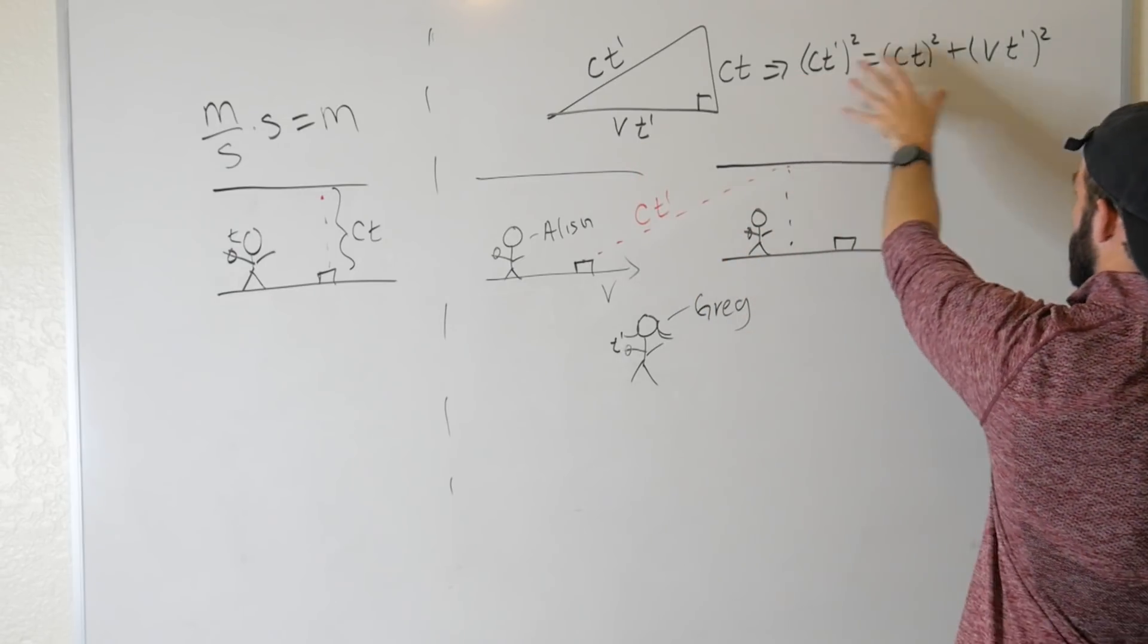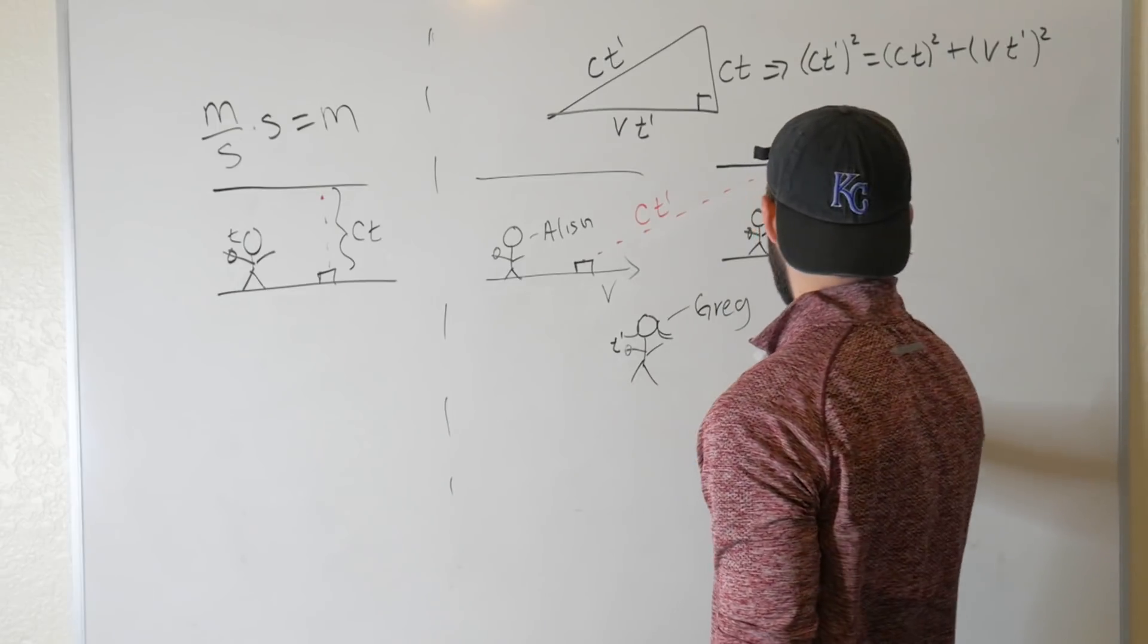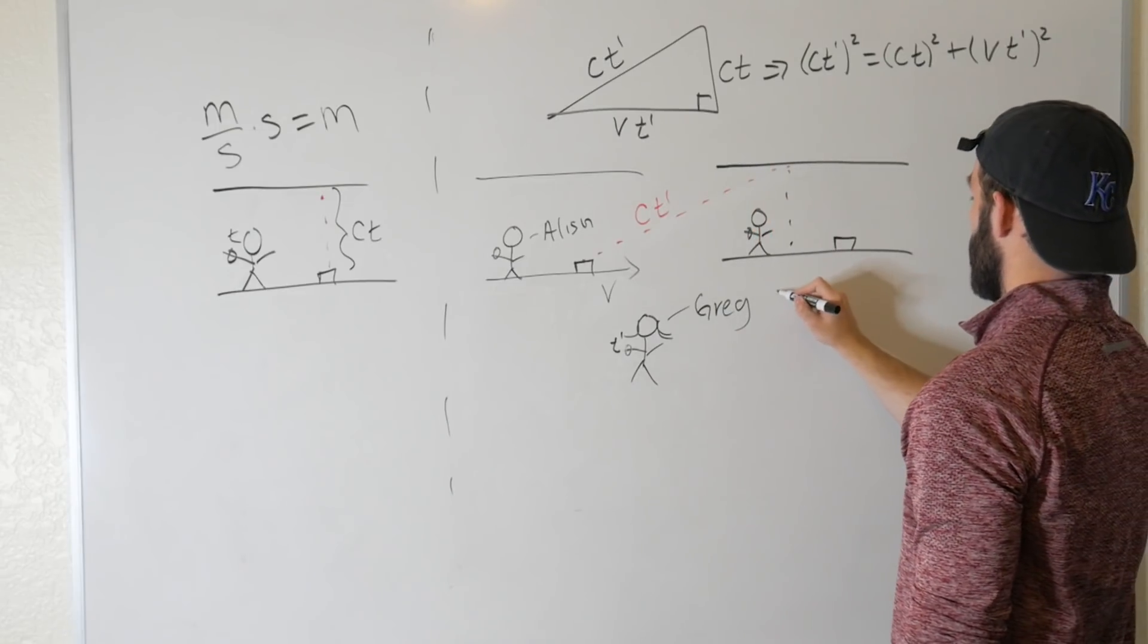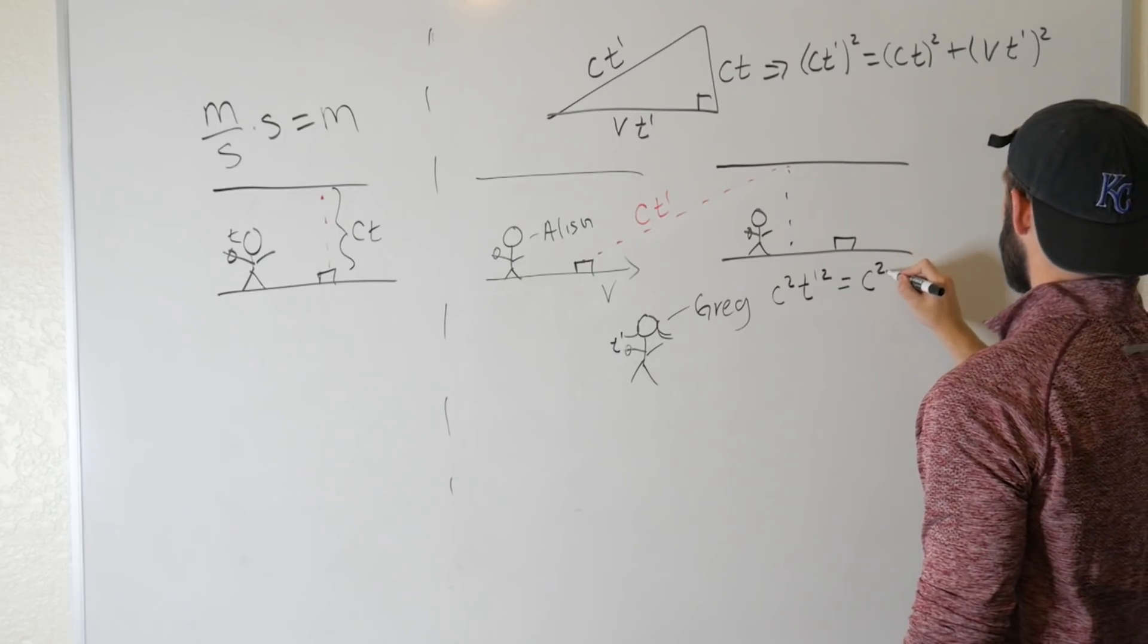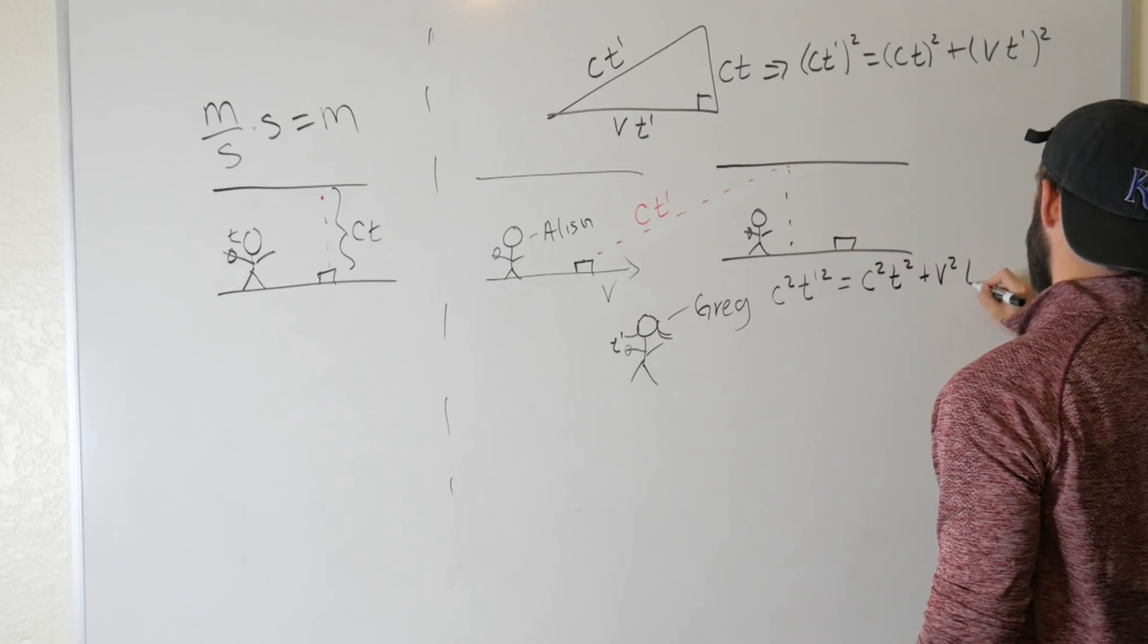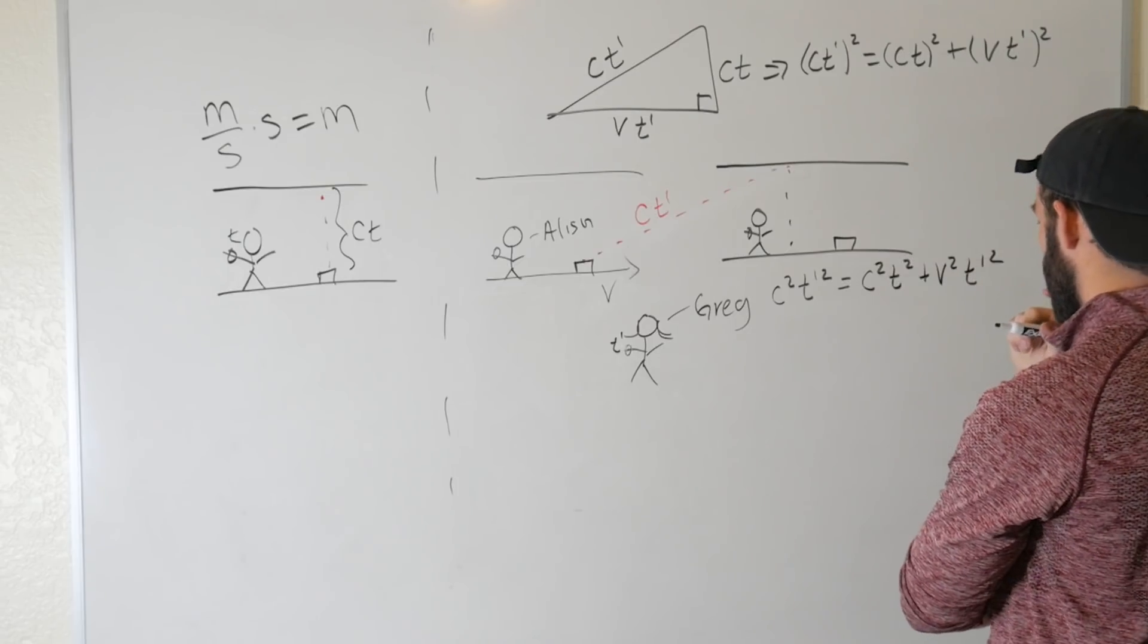And now we can go ahead and just expand all of this stuff out. Let's write it over here. So we get C squared T prime squared is equal to C squared T squared plus V squared T prime squared. Okay?